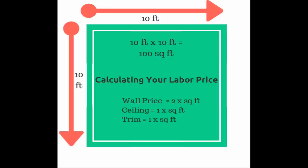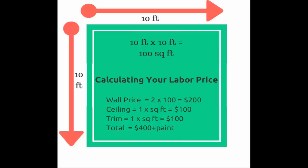To get your wall price, you just take the square footage and multiply that by two. To get the ceiling price, you just take the square footage on its own, and the same thing for the trim. So that gives us: walls at about $200, ceiling at about $100, and trim at about $100.